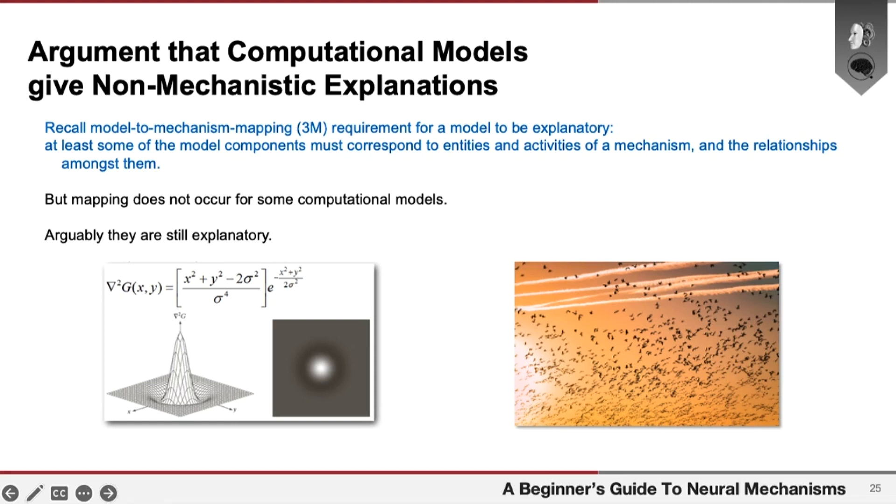So this example here is that model of the retinal ganglion cell as a Laplacian of Gaussian filter. And it's not depicting any of the parts of the neuron. So it's not describing the neuron in terms of its mechanistic operations.